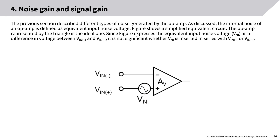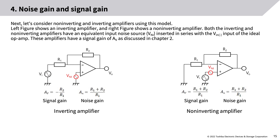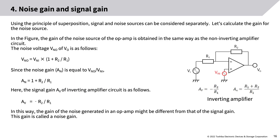Section 4: Noise gain and signal gain. The internal noise of an op-amp is defined as equivalent input noise voltage. The figure shows a simplified equivalent circuit; the op-amp represented by the triangle is ideal. The equivalent input noise voltage VNI is expressed as a difference in voltage between VN+ and VN−. It is not significant whether VNI is inserted in series with VN+ or VN−. The left figure shows an inverting amplifier and the right shows a non-inverting amplifier; both have VNI inserted in series with VN− of the ideal op-amp, with signal gain AV as discussed in Chapter 2.